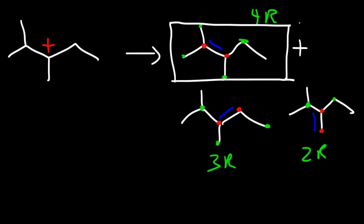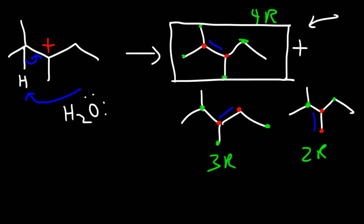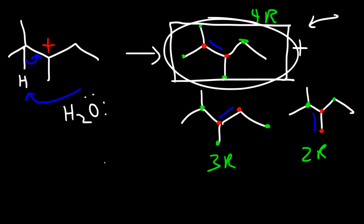Now let's finish the mechanism showing how we get this product. We need to remove a hydrogen, so we need to use a base. The E1 dehydration reaction works well with concentrated sulfuric acid. There might be some water in solution that can act as a base to take off a hydrogen. If you're not sure, you could put B as a generic base. Sometimes if there's not much water, you could use HSO4⁻. To keep things simple, let's use water. These are the last two steps, and after that we get the final product. That's the mechanism for that reaction.